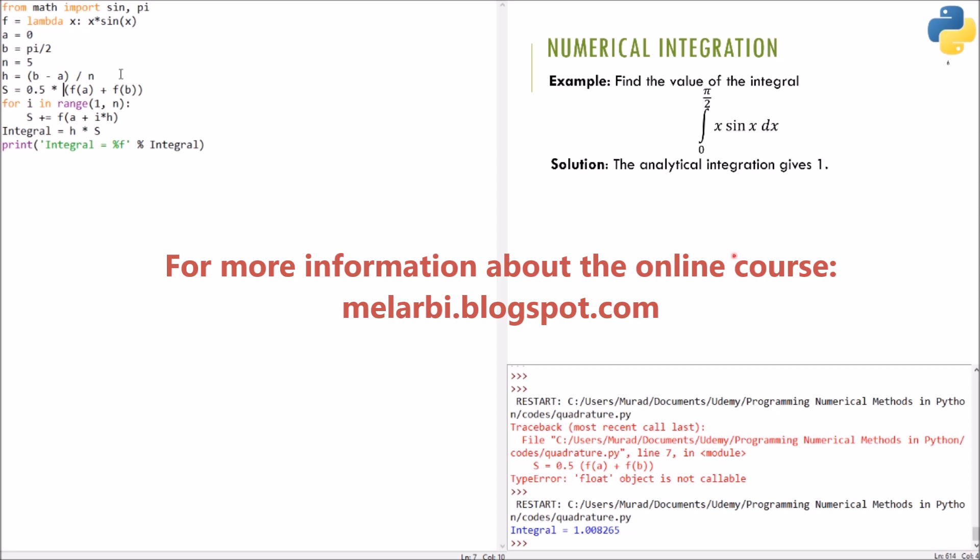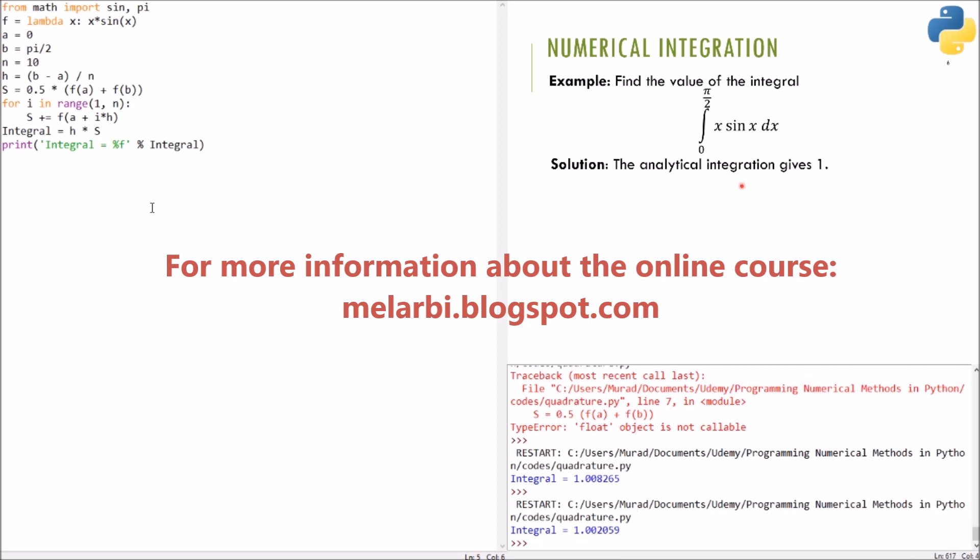Actually, we can make a trial to reduce the error by increasing the number of partitions or number of divisions. So, here, let's take the value. Instead of 5, let's use 10, for example. Let's double the value and run the code. There's reduced from 0.008 to 0.002.